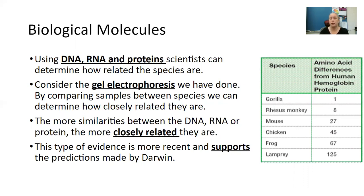Here you're seeing the differences from human hemoglobin proteins. In a gorilla, there is one difference in that amino acid sequence. And as you go down, you can see in a lamprey, which is a type of eel, we have 125 differences between us. So it's amazing to think that just one amino acid difference shows the relationship of another species to us.